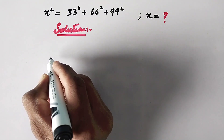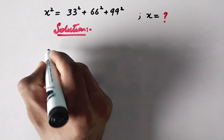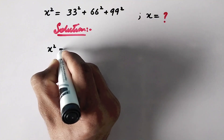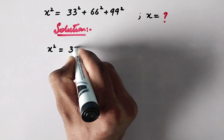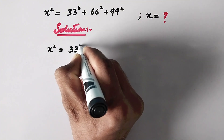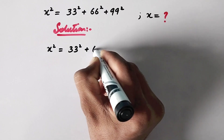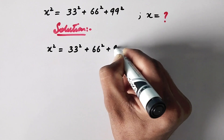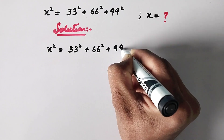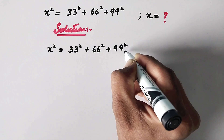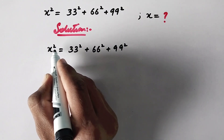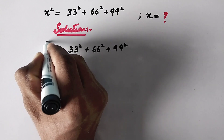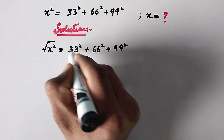In the first step, we will write x squared is equal to 33 squared plus 66 squared plus 99 squared. And to eliminate this square, we will take the square root on both sides of the equation.